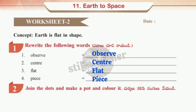In Worksheet 2, rewrite the words: Observe, Center, Flat, and Piece — placing the first letter as a capital. The second activity is to join the dots to make a pot and color it. A pot is given in the form of dots; join all the dots to form the pot, then color it.